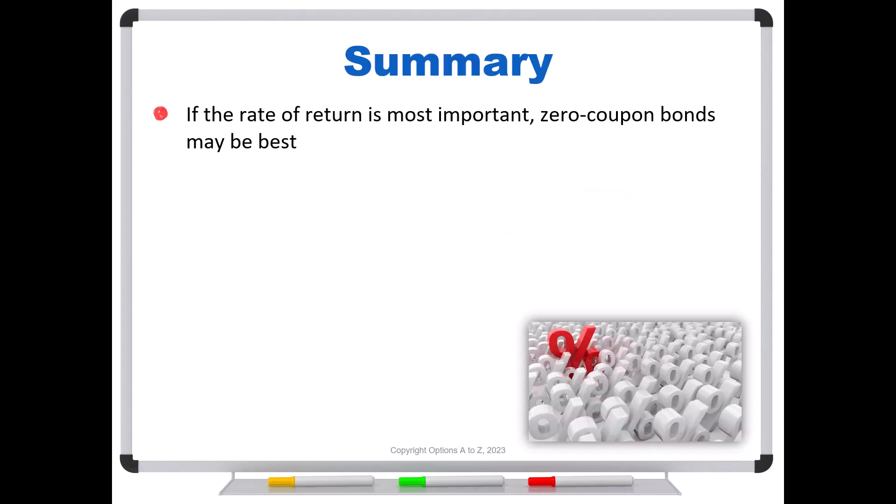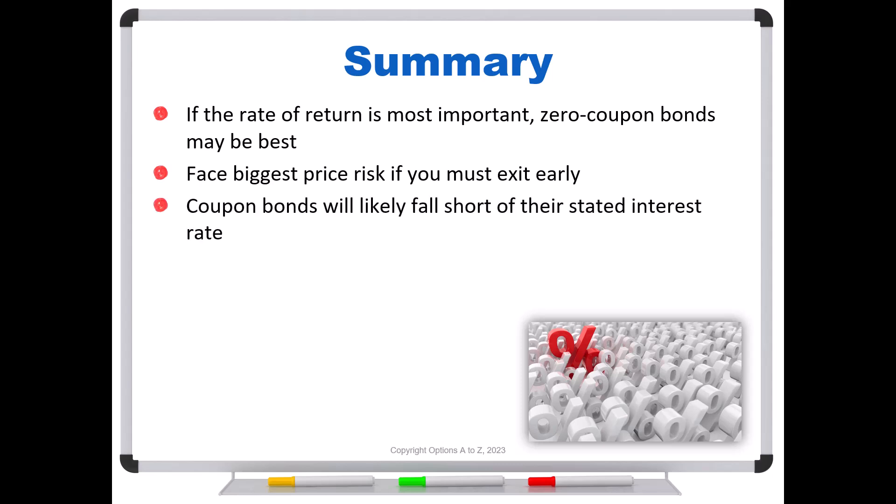So in summary, if the rate of return is the most important, zero-coupon bonds may be your best bet. But you face the biggest price risk if you must exit early, if you need to sell. Now remember, if interest rates fall, you're going to get this windfall. But that's not a risk. The risk is that the rates rise and you had to sell early. On the other hand, coupon bonds will likely fall short of their stated interest rate, because the math assumes you are able to reinvest those coupon payments at the same yield to maturity, which is virtually never going to happen. But the good news is that coupon bonds are not as sensitive if interest rates rise. So if you need to sell early, you're not going to face the same price risk. Those are really the main risks that I find that traders overlook when they're trying to make decisions between a zero-coupon bond or a coupon bond. I hope that helps you to make decisions if you are shopping for bonds.